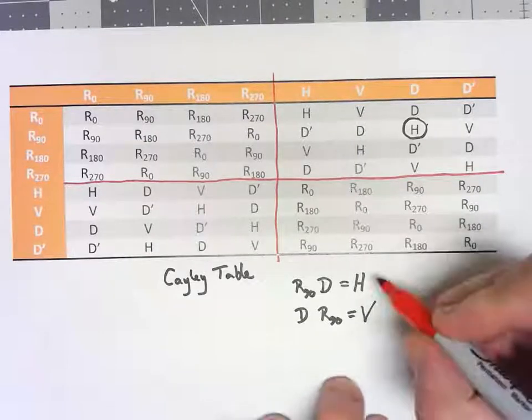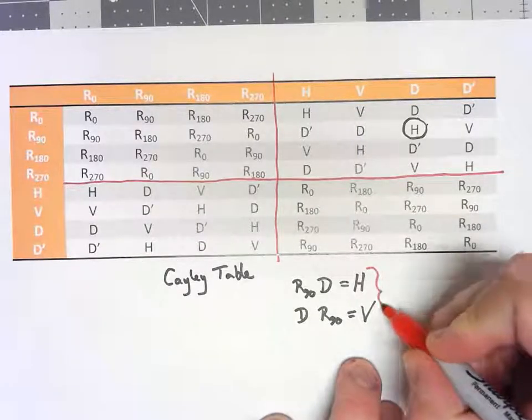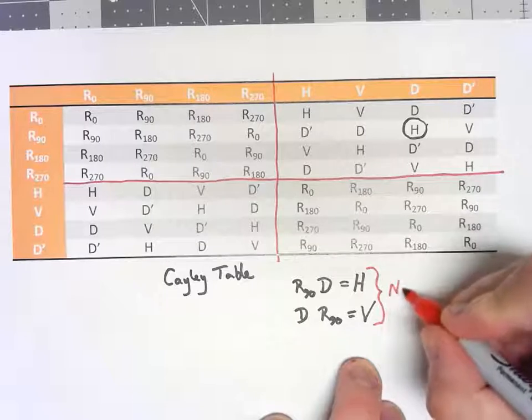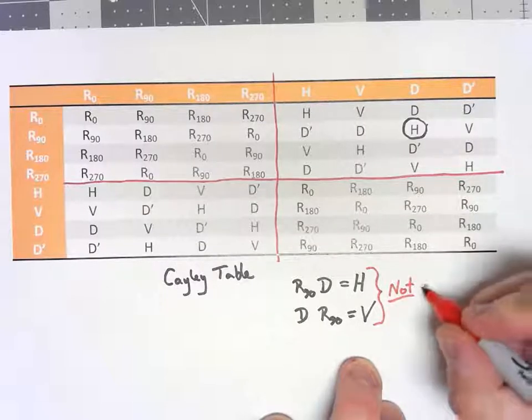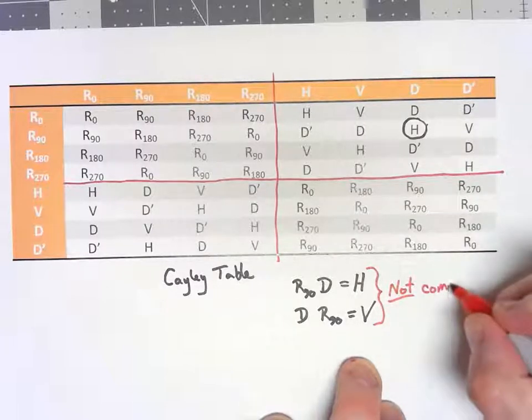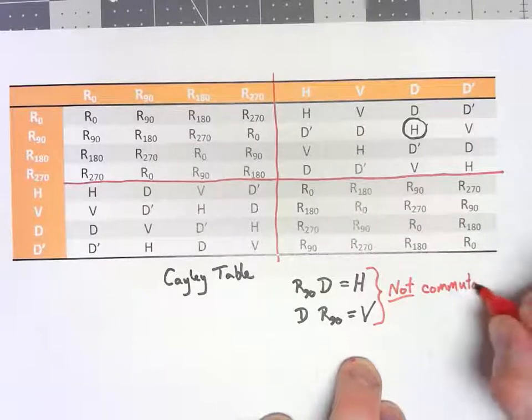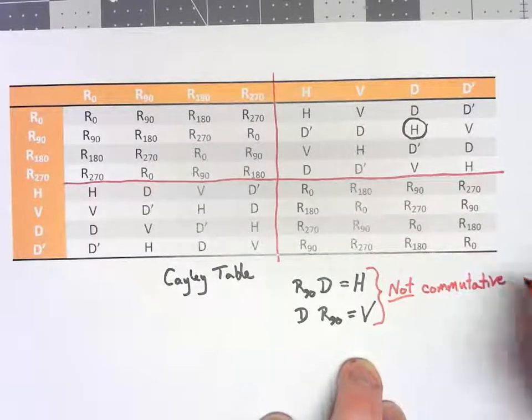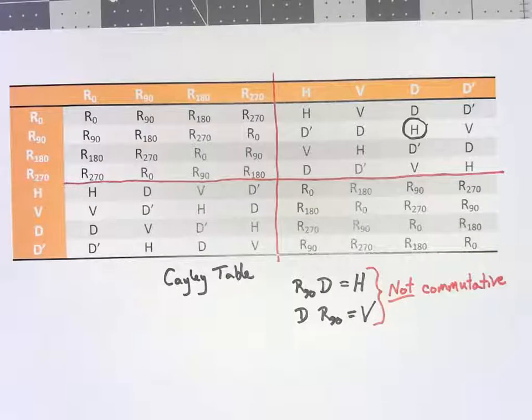For this particular group, this particular Cayley table, it's not commutative. It's going to be very important to realize when things are commutative and when things aren't.